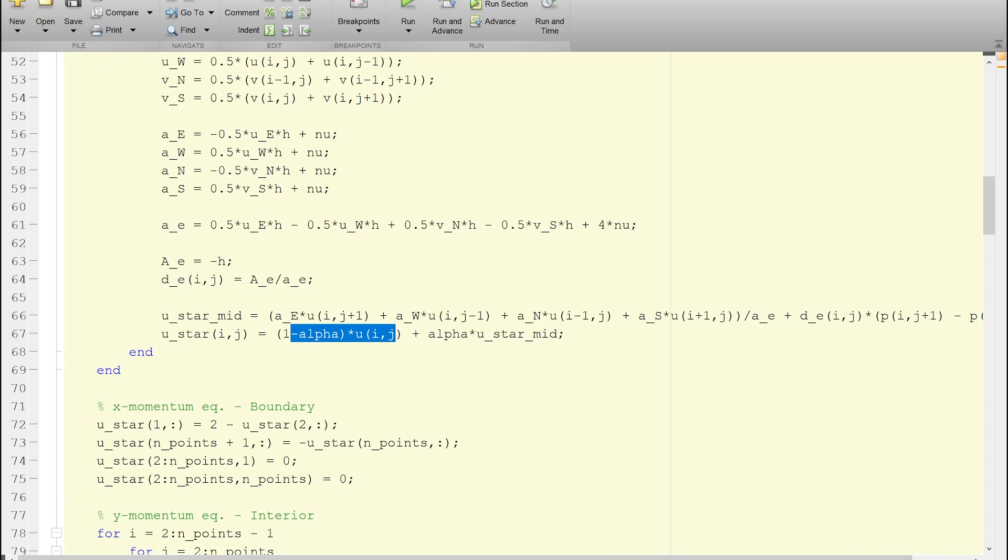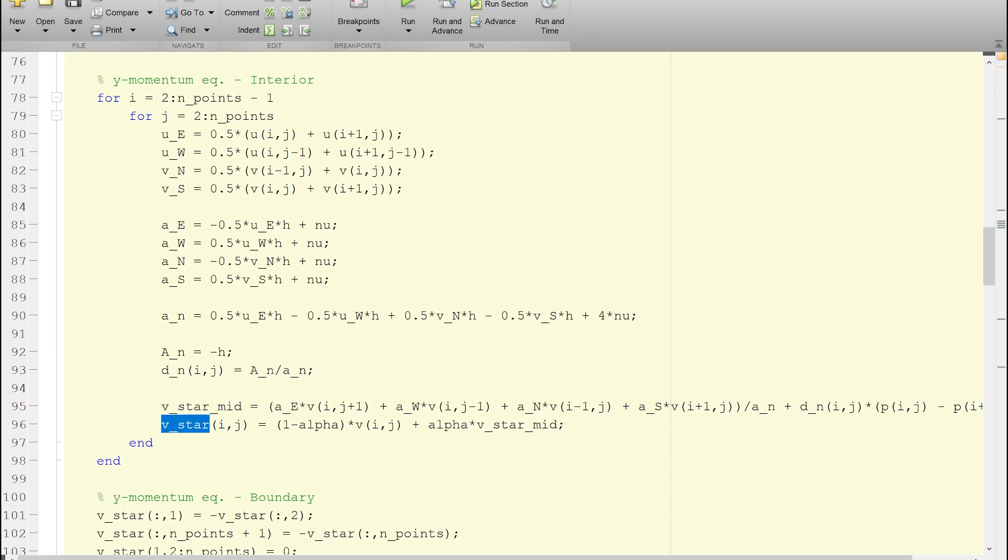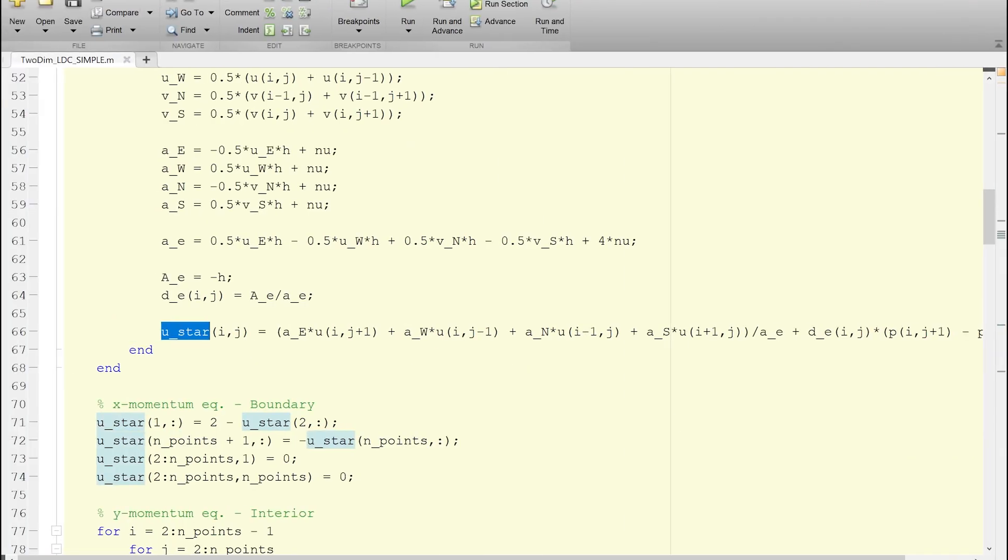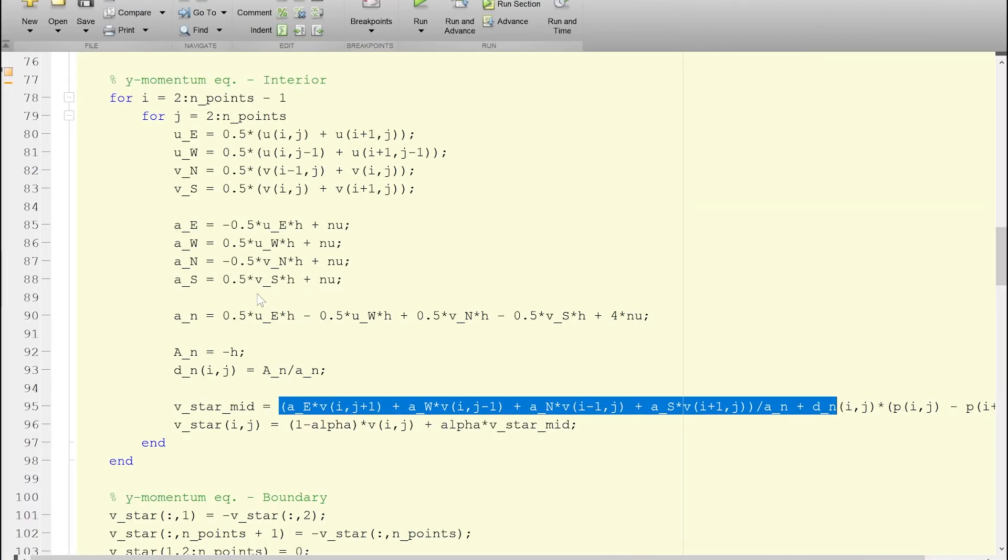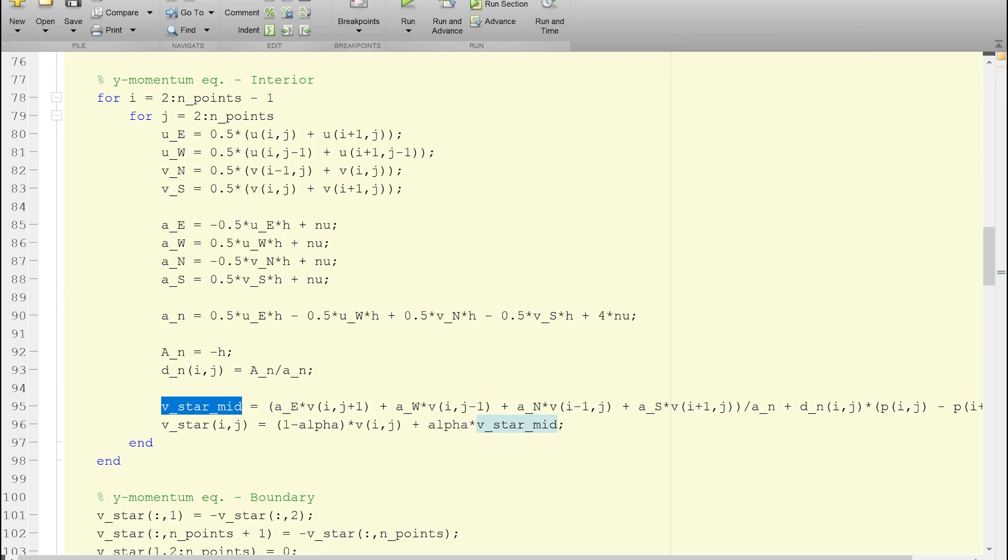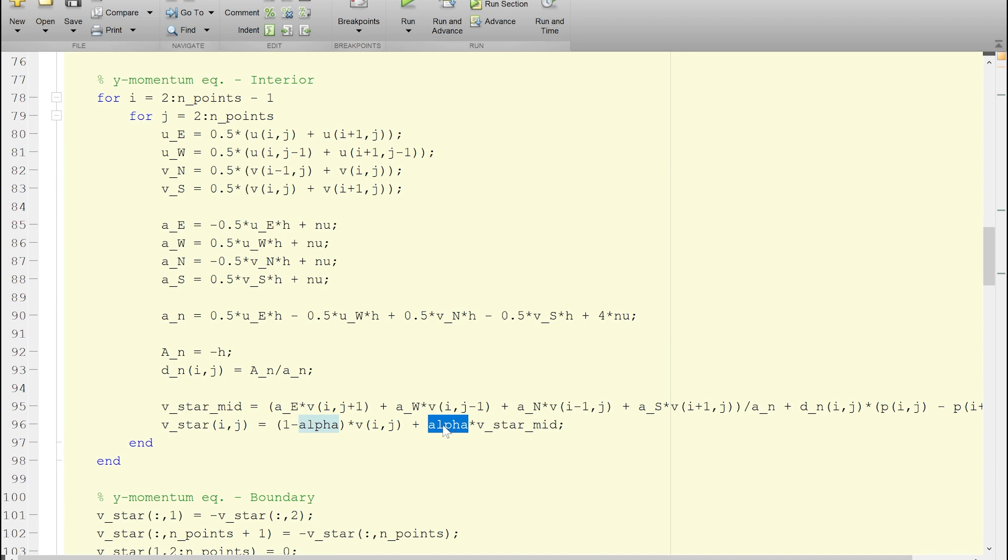The second change is again, because we are changing U star in this fashion, we make the same change for the V star. We define a V star mid. This particular expression here is exactly the same expression for the previous V star in the previous code. I define that as V star mid and then I take a weighted average of V star mid and V. Note that the weight for this V star mid is alpha. If my alpha is 0.01, it means I'm only assigning a weight of 0.01 to V star mid and then 0.99 is the weight for the V.